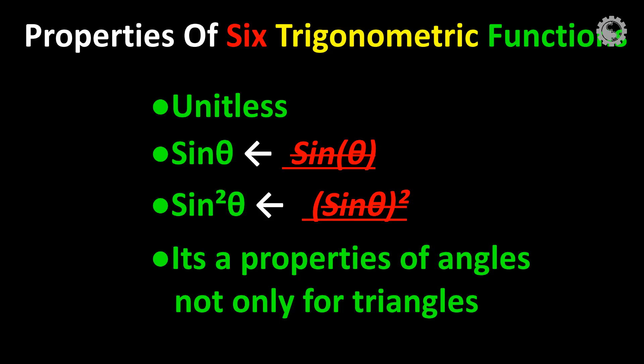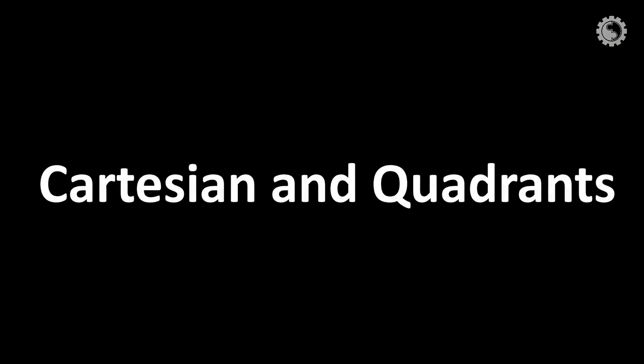Thus, we understand the features of the trigonometric ratios and functions. Next, we move to Cartesian and its quadrants. In the Cartesian plane, the two axes x and y split the plane into four parts, and they are called quadrants.